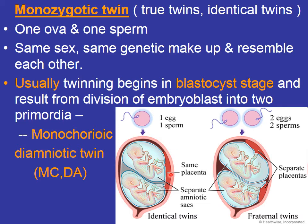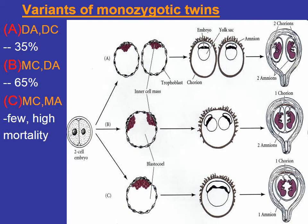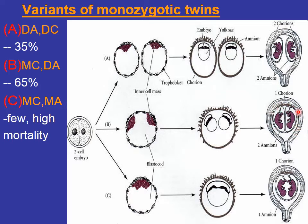Most monozygotic twins arise from splitting of the inner cell mass during the last days of the first week, accounting for about 65% of monozygotic twins. In this case, the inner cell mass divides into two groups forming two separate babies; as they share a single blastocyst cavity, they will share the single chorionic cavity but have their own amniotic cavities and a single placenta.